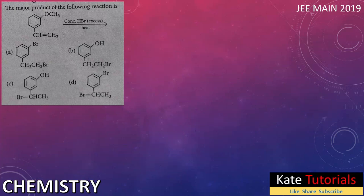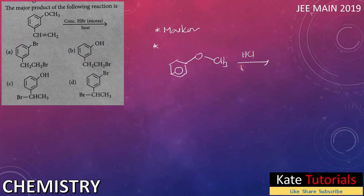So the two key concepts are: first, Markovnikov's rule for HBr addition to the double bond; and second, whenever an ether (R-O-R) is treated with concentrated HBr or HCl with heating, the C-O single bond breaks — giving a phenol and CH3Br (or CH3Cl). The benzene ring O-bond, due to resonance (partial double bond), cannot be broken.